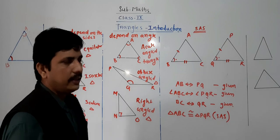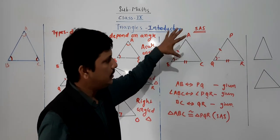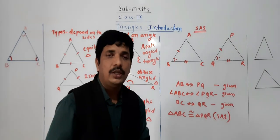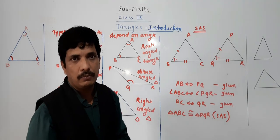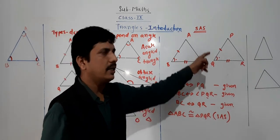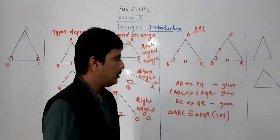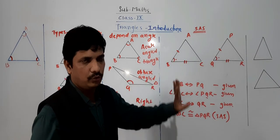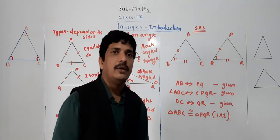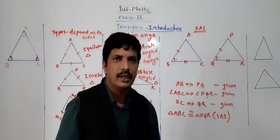Practically, we can superimpose Triangle ABC onto Triangle PQR — if it perfectly matches in side, area, and all manners, both triangles are congruent. But theoretically, we need to show only three elements. A triangle has six elements — three sides and three angles. We show three elements of one triangle are equal to the corresponding three elements of the other triangle, and then we can say both triangles are congruent.